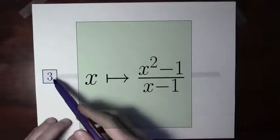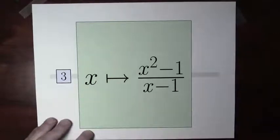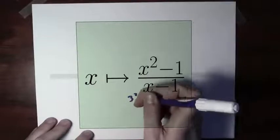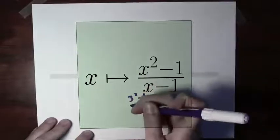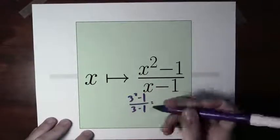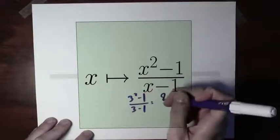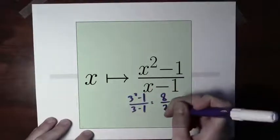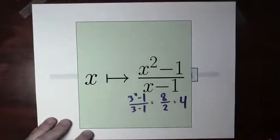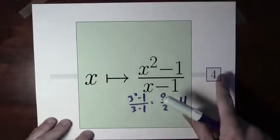Let's try plugging the number 3 into this function. I plug in 3: 3 squared minus 1 over 3 minus 1. That's 9 minus 1 is 8, and 3 minus 1 is 2. And 8 over 2 is 4. Sure enough, out of this function comes the number 4.